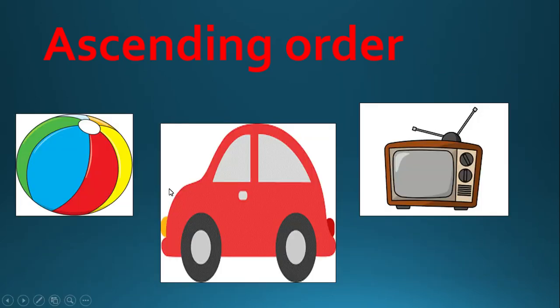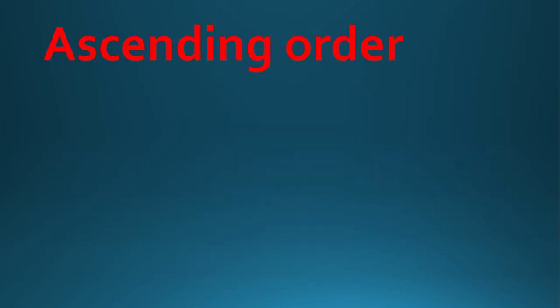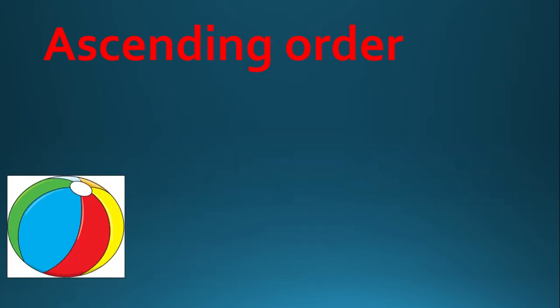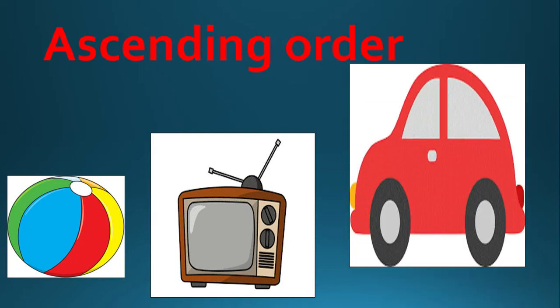Now let's arrange these things in ascending order. Ascending means smallest to biggest, so according to that you have to arrange these things. First, ball will come, then TV and then car, because ball is the smallest thing. Then TV, because TV is bigger than the ball, and car is the biggest. So in this arrangement ball is the smallest thing and car is the biggest thing.